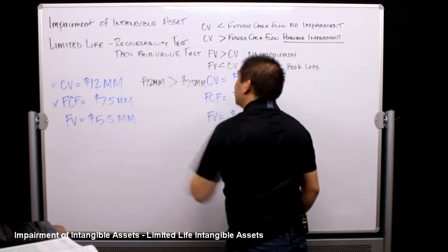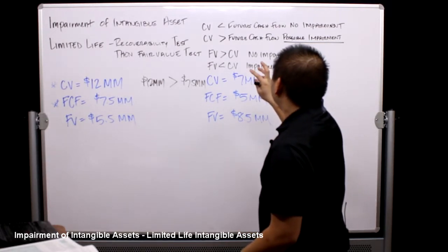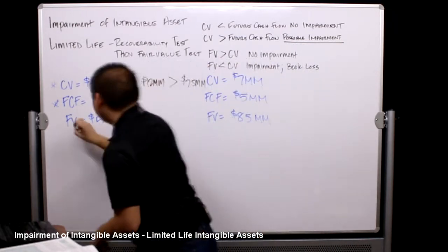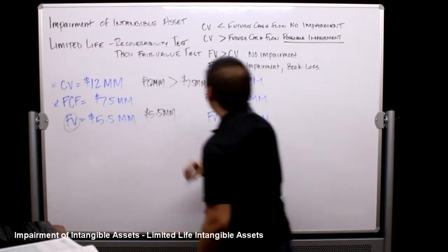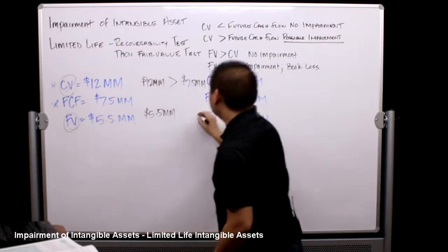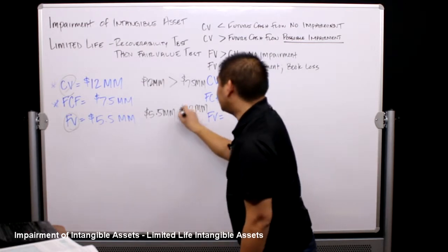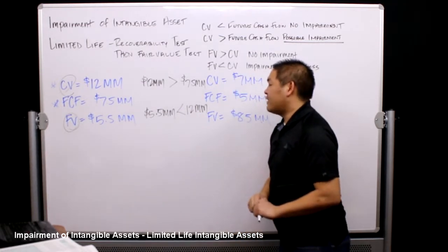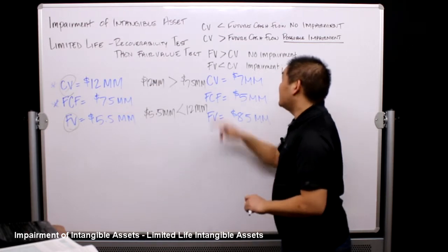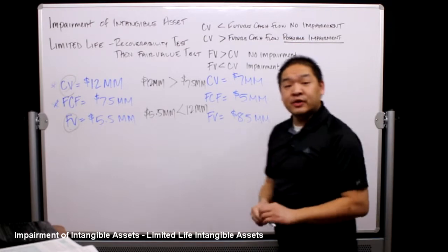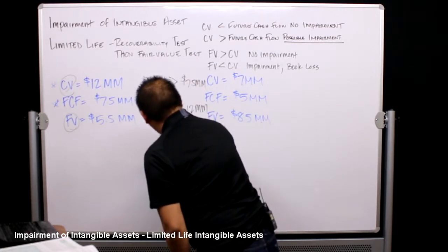We move on to step two, the fair value test. We take the fair value and compare it to the carrying value. Fair value is five point five million and the carrying value is twelve million. Five point five million is less than twelve million, therefore there is an impairment and we're going to book a loss. The loss is twelve minus five point five, which equals six point five million dollars.